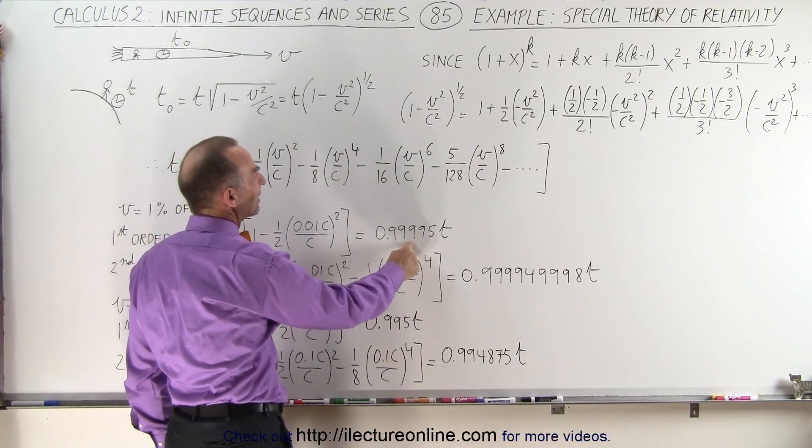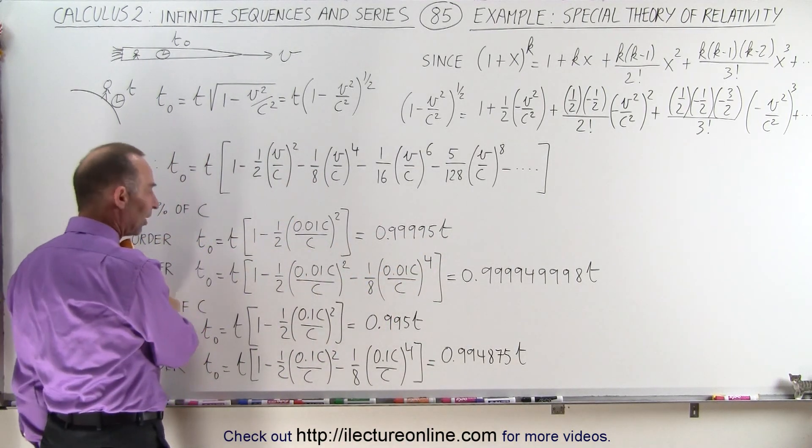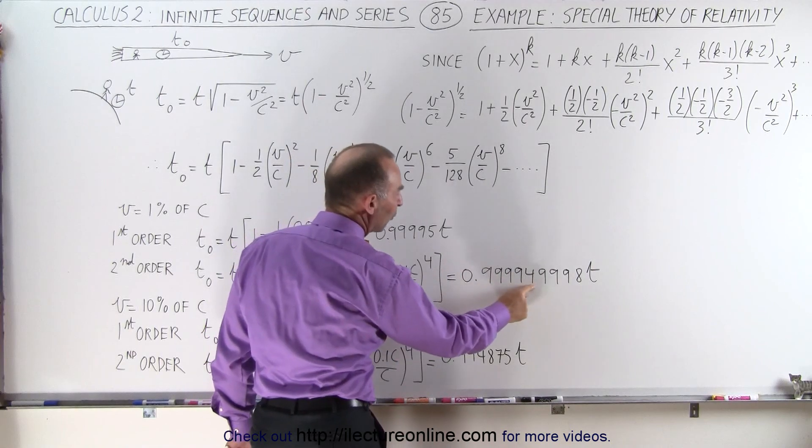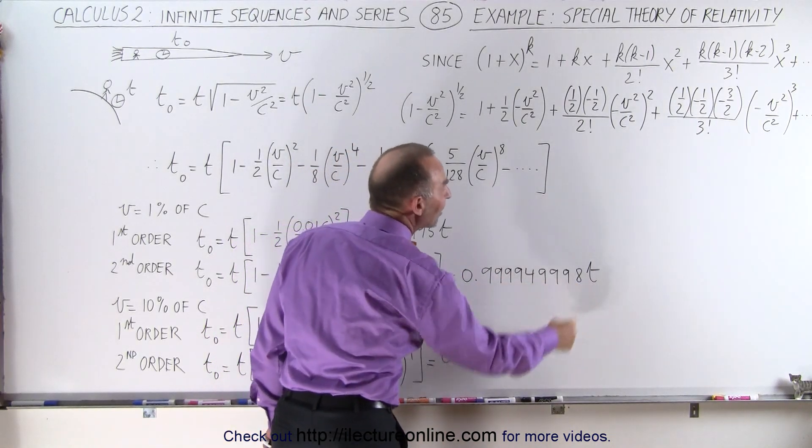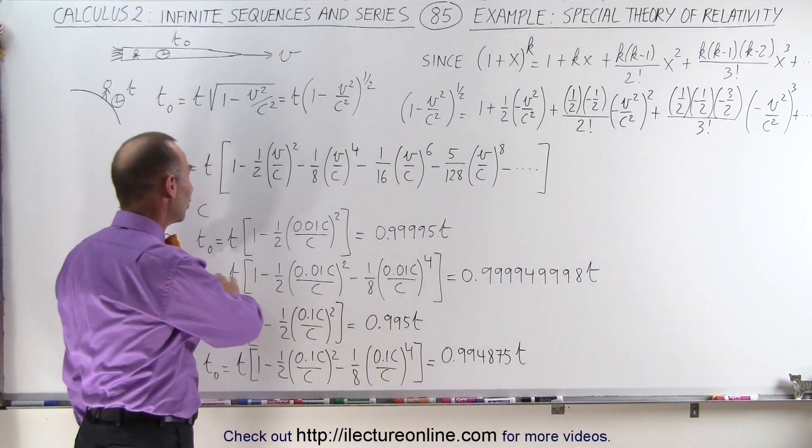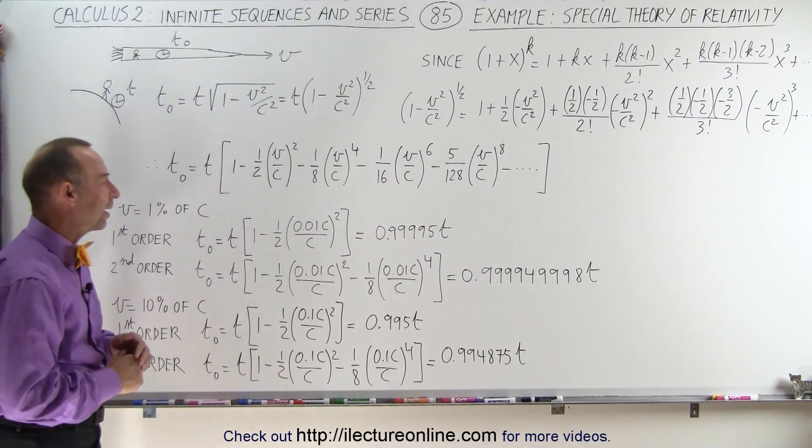So 0.99995t for the first order approximation. For the second order approximation, notice instead of having a five here becomes a 49998 times t. So for most purposes, we don't even need to go to a second order approximation. A first order can do just fine.